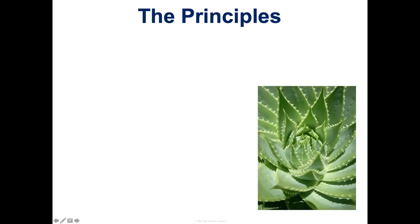Asexual reproducers like bacteria are just cloning themselves, so the only way they get new variation is through random mutations — that's why mutations are the ultimate source. But even in those situations, mutations are always happening so there's always some variation. If you need the evidence, this unit is about the evidence — today I'm giving you the framework, and then we'll fill in throughout the unit with examples, visuals, activities, and real-world data.